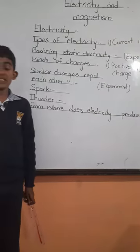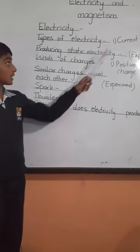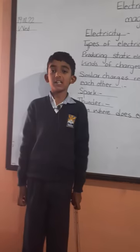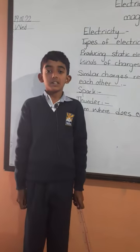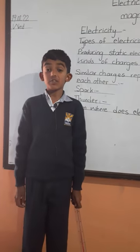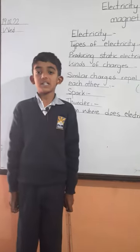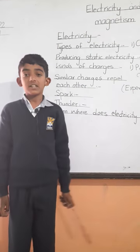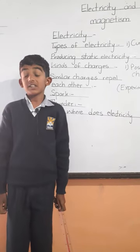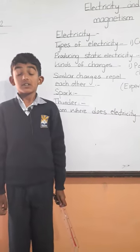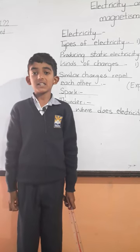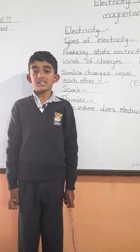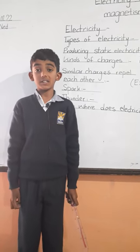Types of electricity: current electricity and static electricity. The electricity which flows through a wire is called current electricity. The electricity that gathers or stays on some object is called static electricity.